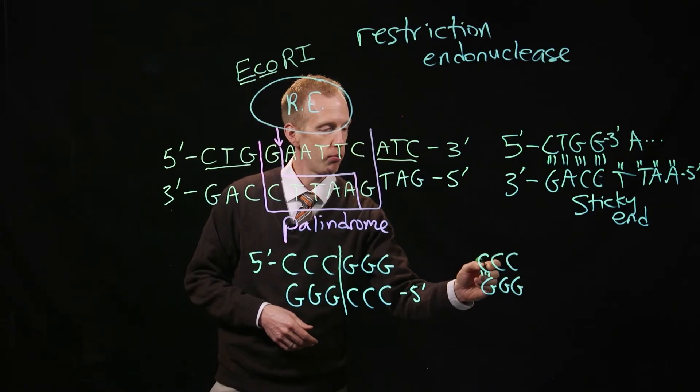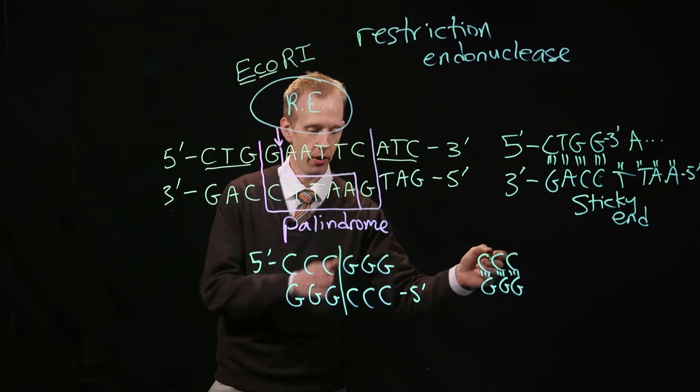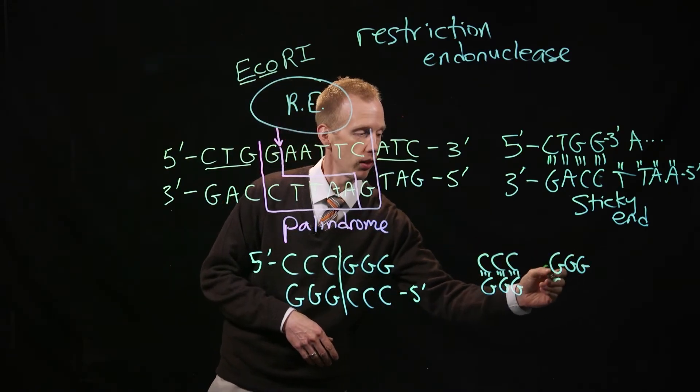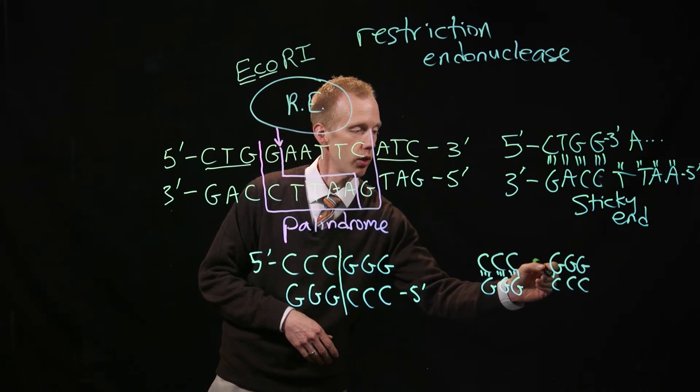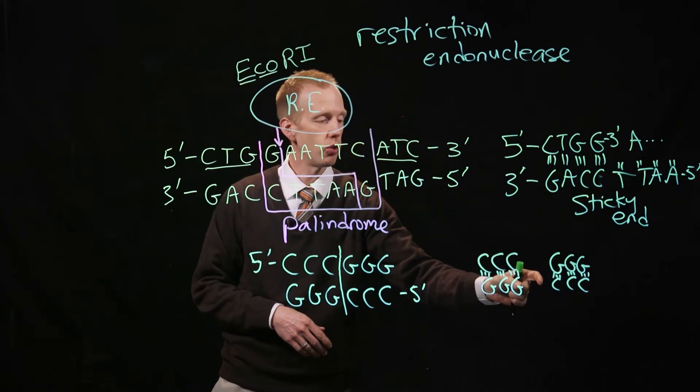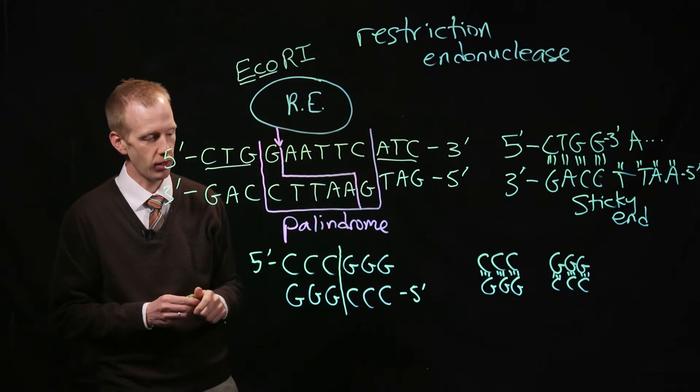You have one pair of strands that are base paired on this side of the cut, and then you have another segment of chromosome over here, still base paired together. There are no single nucleotides or chains of nucleotides in the middle that aren't still base paired after this enzyme cuts.